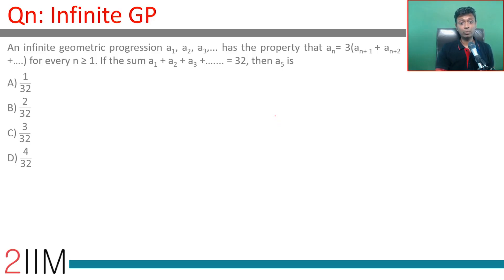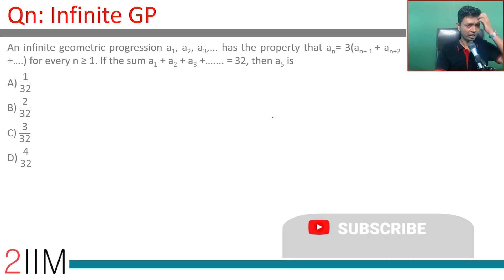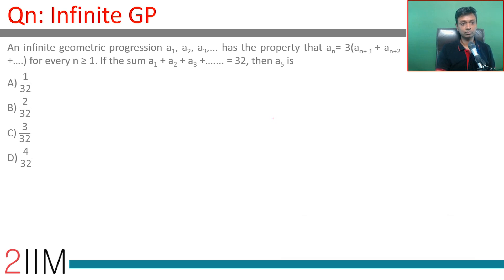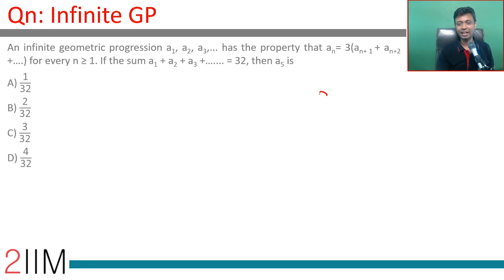An infinite geometric progression a1, a2, a3 has the property that a_n equals 3 times a_{n+1} plus a_{n+2} and so on, for every n greater than or equal to 1. The sum of infinite terms — a1 plus a2 plus a3 and so on — equals 32, so a divided by (1 minus r) is 32.